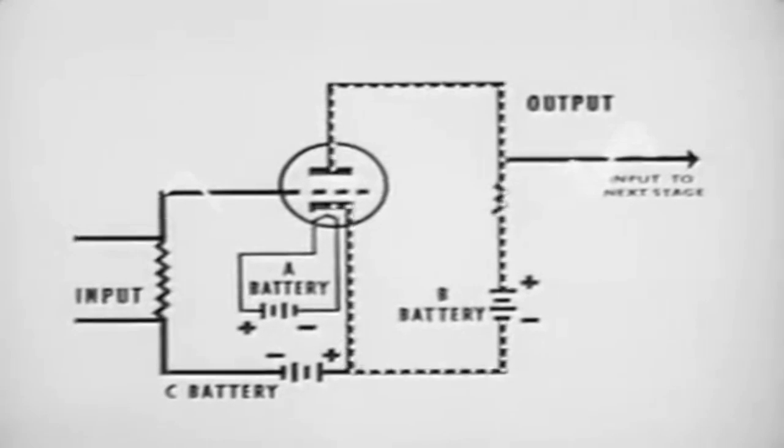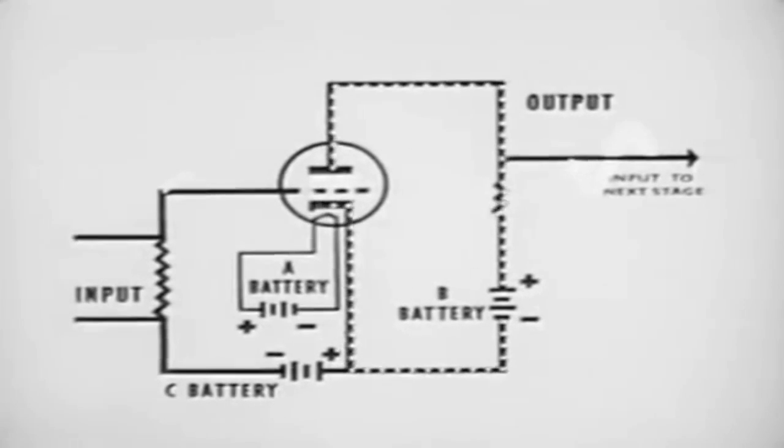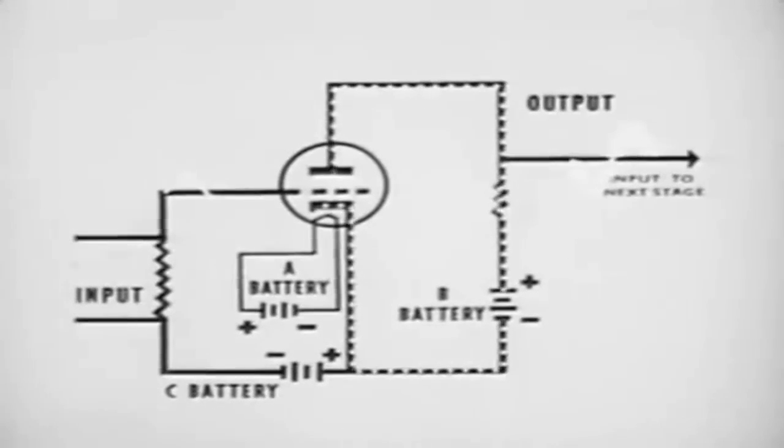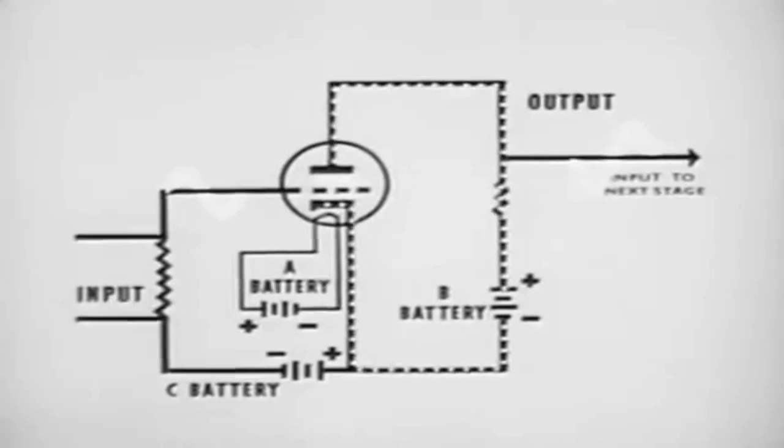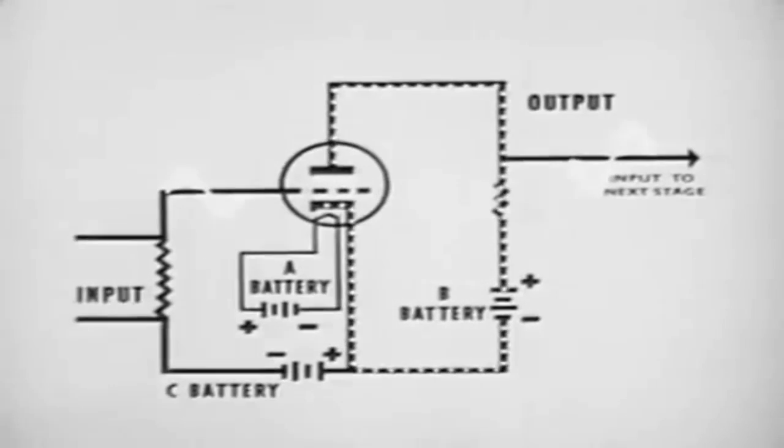This voltage change across the output is an amplified reproduction of the input. It should be noted that the output voltage and the input voltage are 180 degrees out of phase with each other.